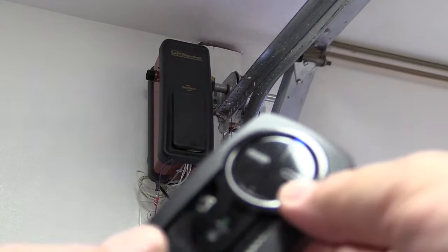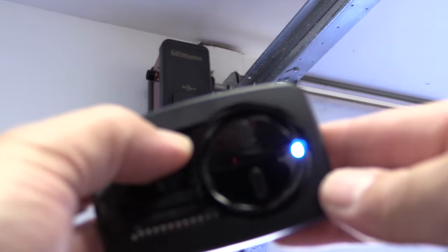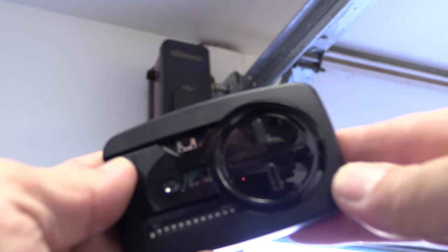After the correct number of pushes, the garage door will open. Locate the button inside, press it one more time, the light will go out and that's it. It's programmed.